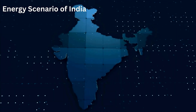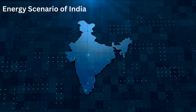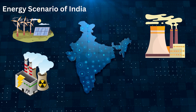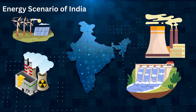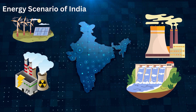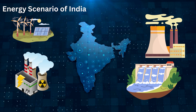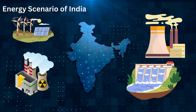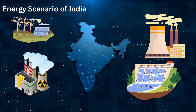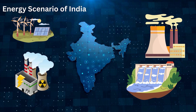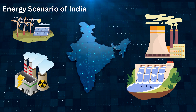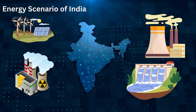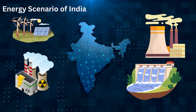Energy Scenario of India: India's installed non-fossil fuel capacity has increased 396% in the last 8.5 years and stands at more than 179.57 gigawatts, including large hydro and nuclear, about 42% of the country's total capacity, as of November 2023. India saw the highest year-on-year growth in renewable energy additions of 9.83% in 2022.